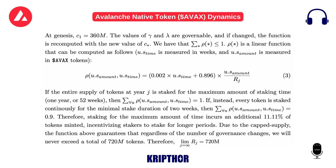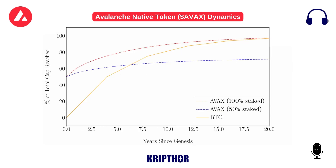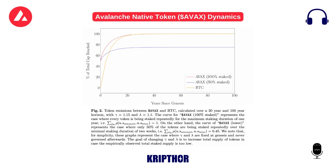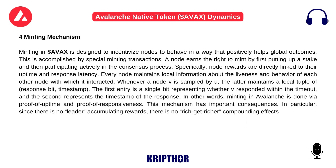Due to the capped supply, the function above guarantees that regardless of the number of governance changes, we will never exceed a total of 720 million tokens. Graphics for the minting mechanism show percent of total cap reached and years since Genesis.